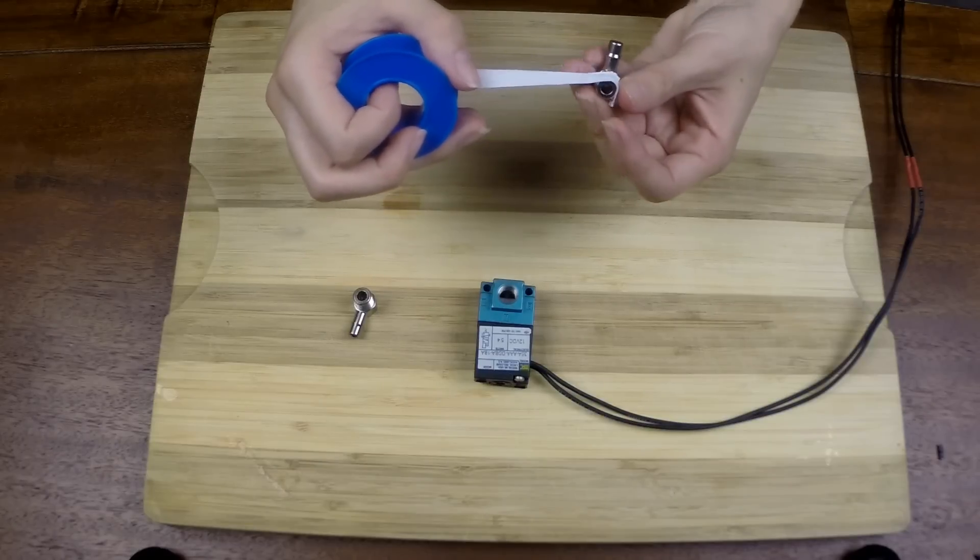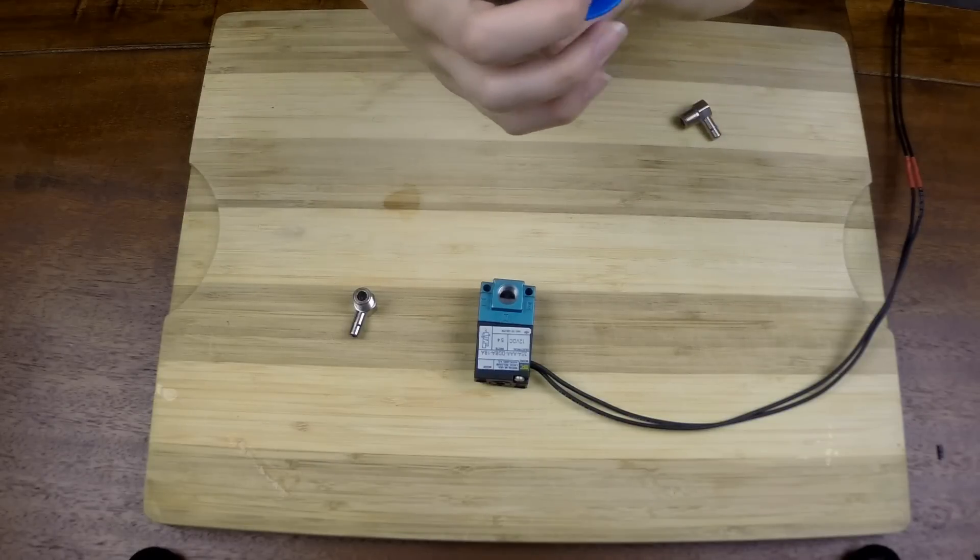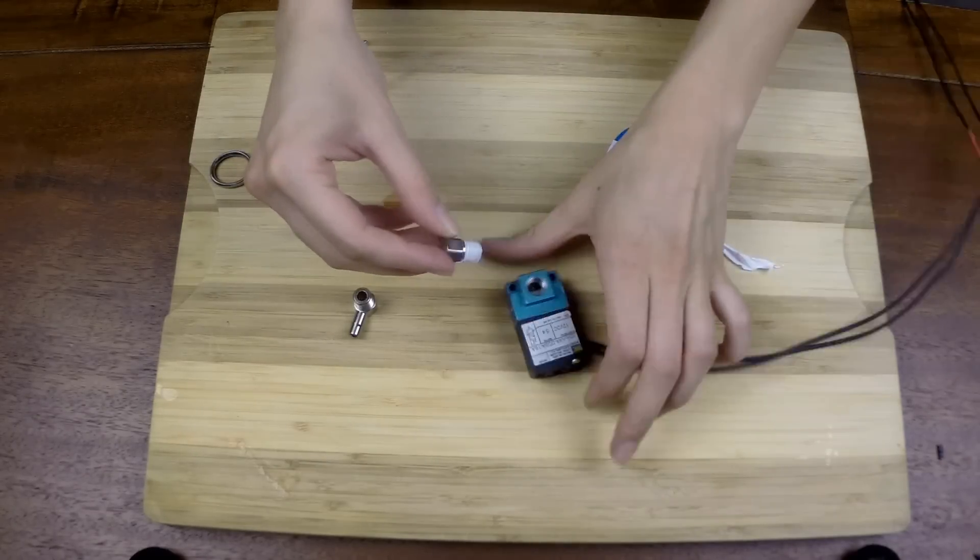Be sure not to get any plumber's tape around the end of the barbed and careful not to over tighten these as they only need to be snug.